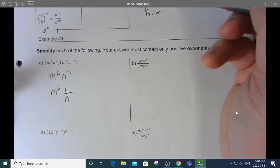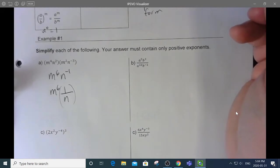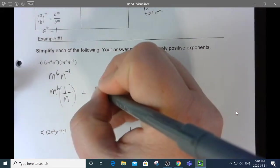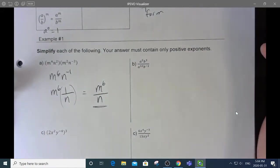So, n to the negative 1 is like saying 1 over n. Now, I wouldn't call that the simplest answer, because I know what m to the 6 times 1 is. Anything times 1 is just itself. So, my final answer here is m to the 6 over n. That is the simplest answer.